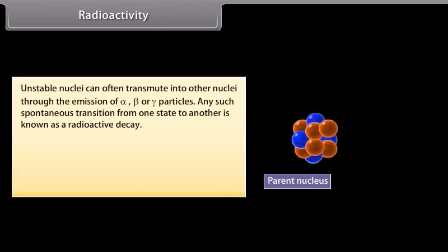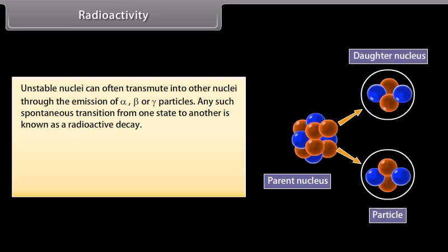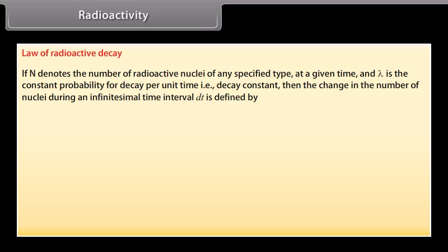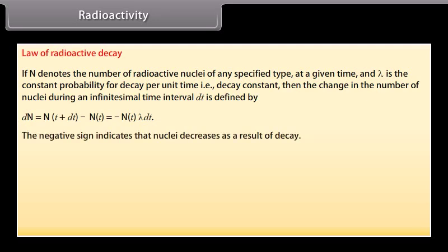Radioactivity. Unstable nuclei can often transmute into other nuclei through the emission of alpha, beta, or gamma particles. Any such spontaneous transition from one state to another is known as a radioactive decay. There are three types of radioactive decay: alpha decay, beta decay, and gamma decay. Law of radioactive decay. If N denotes the number of radioactive nuclei of any specified type at a given time and lambda is the constant probability for decay per unit time, that is decay constant, then the change in the number of nuclei during an infinitesimal time interval dt is defined by: Dn is equal to Nt plus dt whole minus nt which is equal to minus nt lambda dt. The negative sign indicates that nuclei decreases as a result of decay.